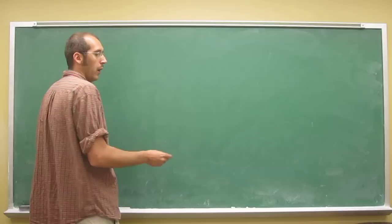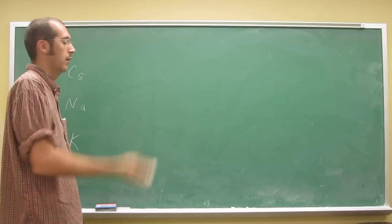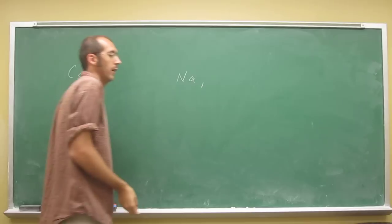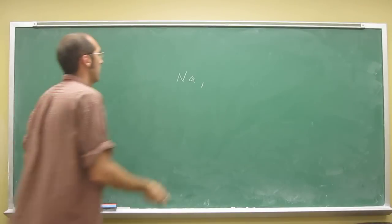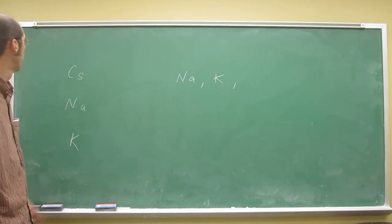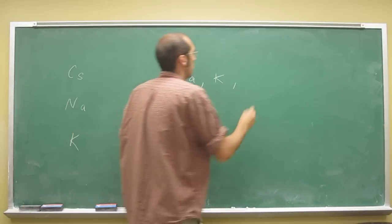So the smallest one is going to be the one that's the highest up. And in this case, it's sodium. And then the next smallest one is potassium. And then cesium.